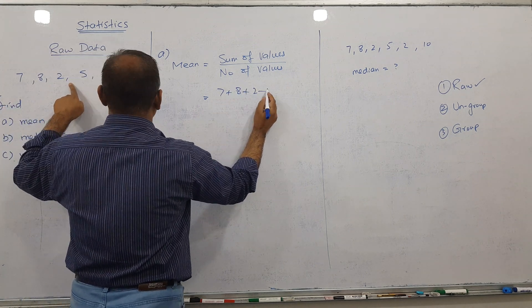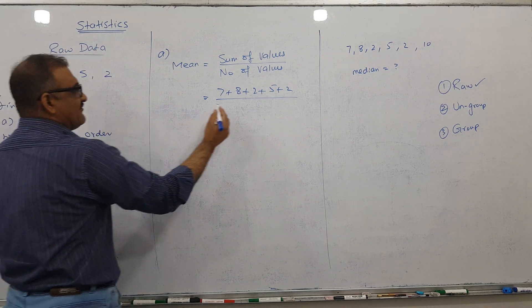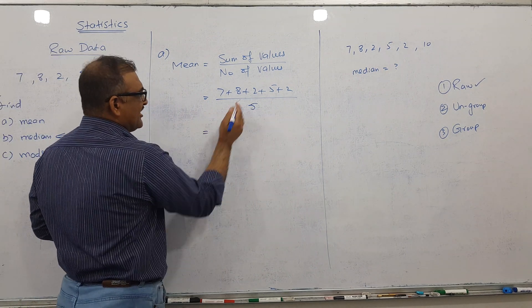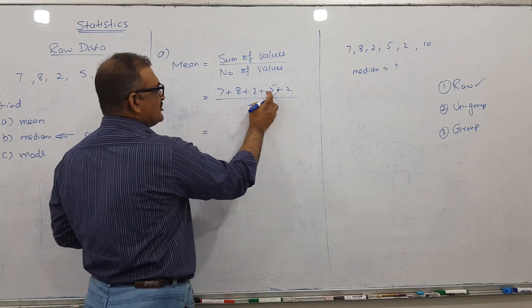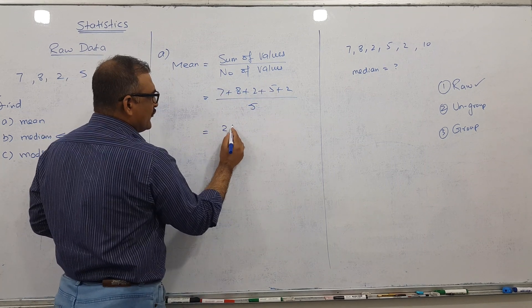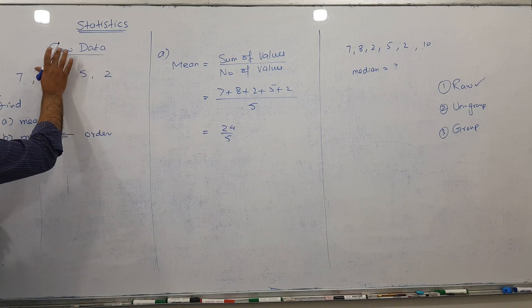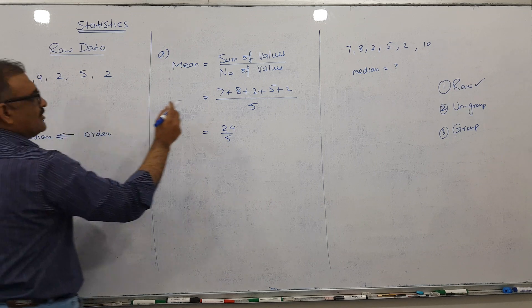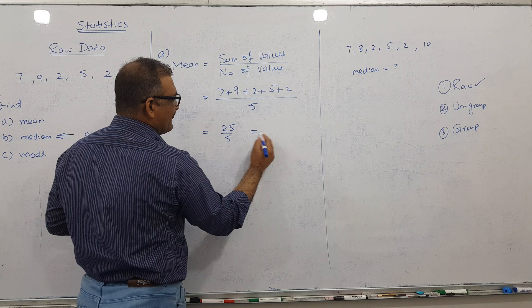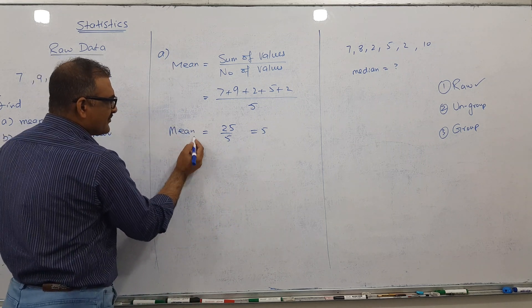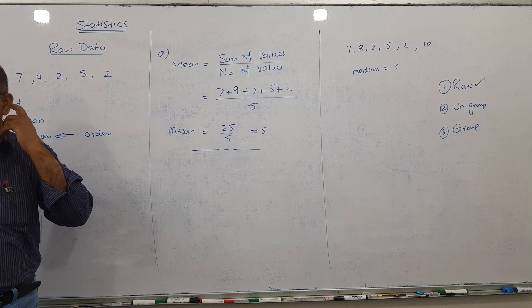Sum of values means add them all: 7 plus 8 plus 2 plus 5 plus 2, divided by 5 numbers. 8 plus 2 is 10, so 17, 17 plus 2 is 19. Let me change this to 9, so this becomes 45, and the answer becomes 5. So mean is 5, also called average.